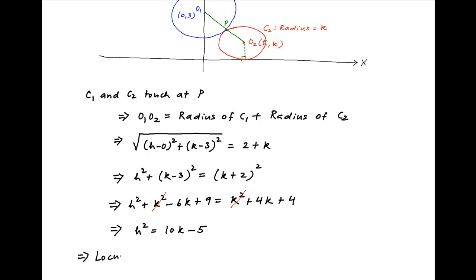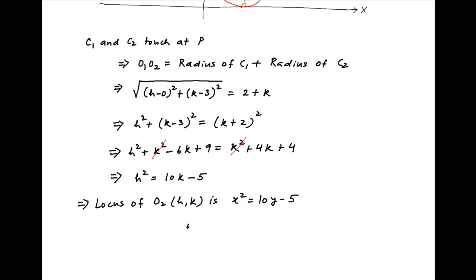Therefore, the locus of the center of the desired circle is obtained by replacing h with x and k with y, which gives x² = 10y - 5, which is a parabola. This is the required answer.